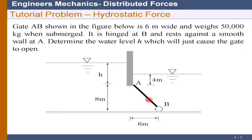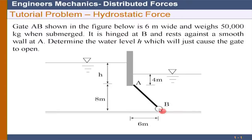The resultant force will come from the pressure distribution on both sides as well as the weight of the body. You need to decide on the direction of the resultant force such that the gate will not open, or is just about to open. Think of it in terms of the resultant force — what has to happen to it for the gate to be just about to open.